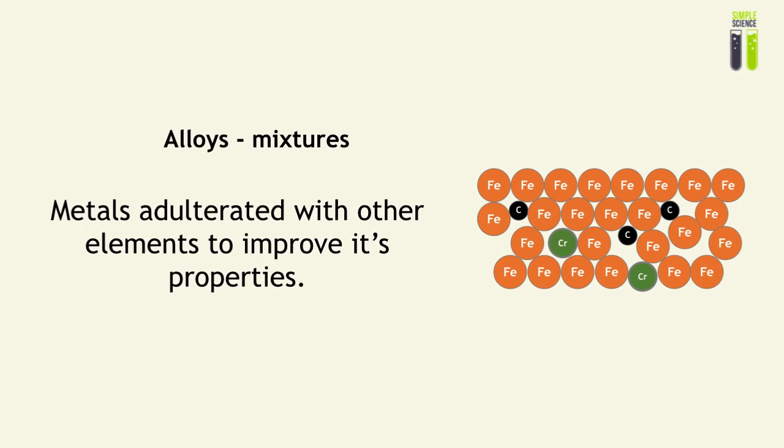And the prime example of a mixture is also an alloy. Metals can be adulterated or mixed with other elements to improve its structures. For example, iron. It can be mixed with carbon and chromium to further improve its structure to form stainless steel. So an alloy is a mixture.